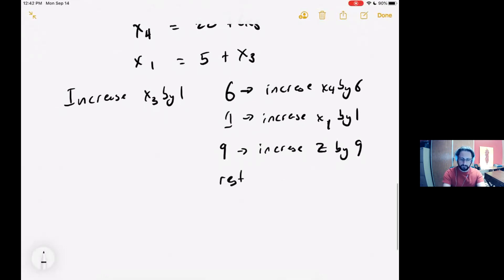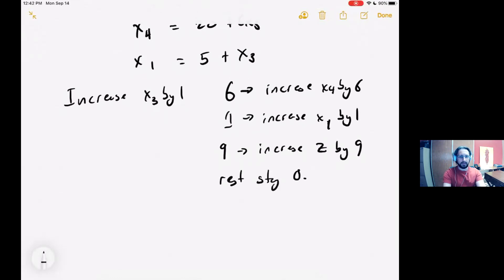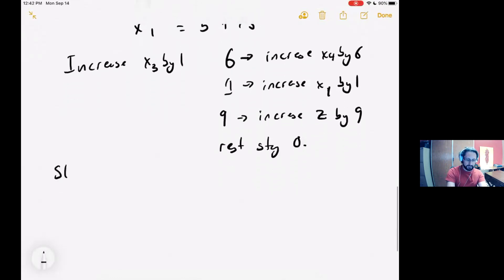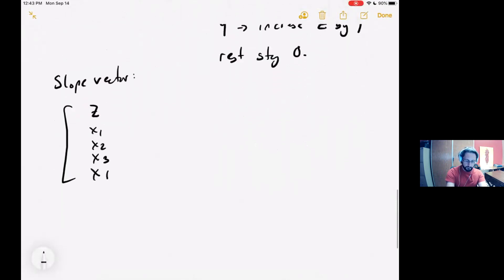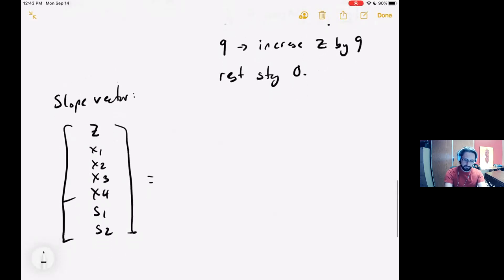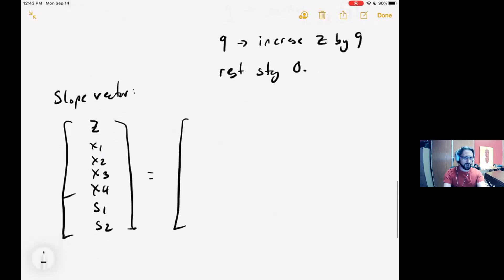So the rest stay 0. This lets me create a slope vector for z, x1, x2, x3, x4, s1, and s2.